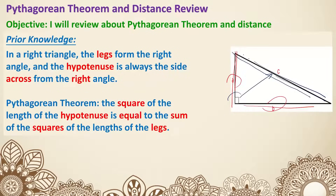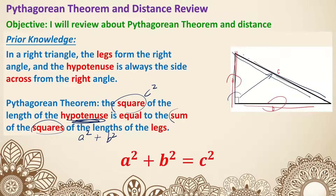As for the Pythagorean theorem, the square of the length of the hypotenuse — hypotenuse is always the letter C — so C squared equals the sum of the squares of the lengths of the legs, A and B. So the Pythagorean theorem is A squared plus B squared equals C squared.